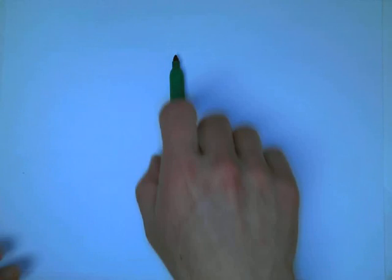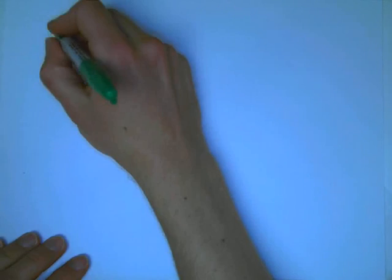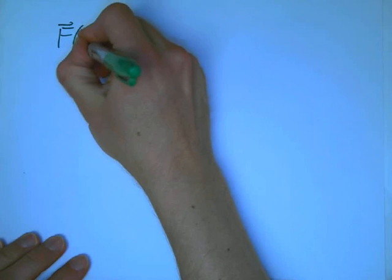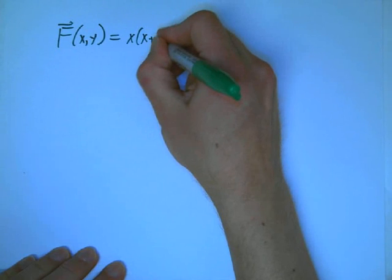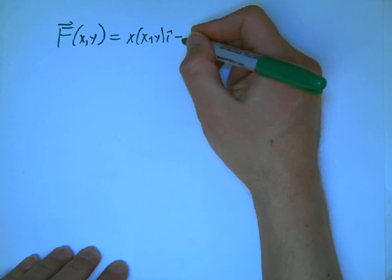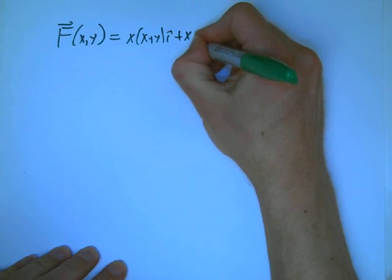Here's a Green's Theorem problem that we didn't have time to get to in class. Use Green's Theorem to find the work done by the force. Here's a vector field: F of xy equals x times (x plus y)i plus xy squared j.